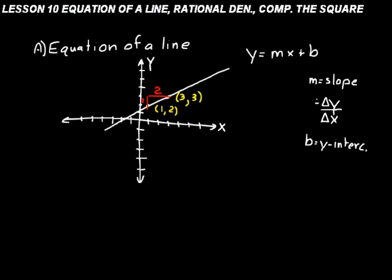The slope is the change in the y direction relative to the change in x, and b equals the y-intercept. Looking at our line, the slope would be 1 over 2. So we can say y equals one-half x plus b. We still need to figure out what b is.